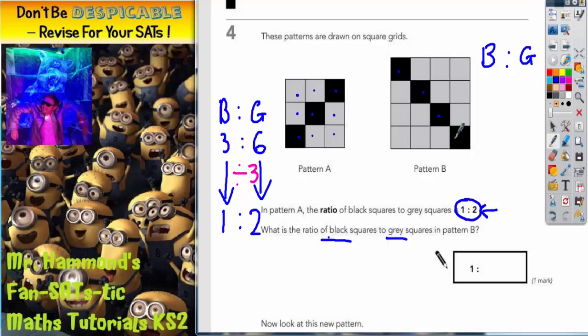Let's count the number of squares of each first. So we've got 1, 2, 3, 4 black squares. And 1, 2, 3, 4, 5, 6, 7, 8, 9, 10, 11, 12 grey squares. So we've got a ratio of 4 to 12.